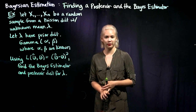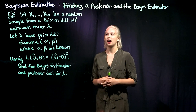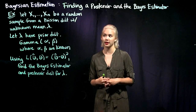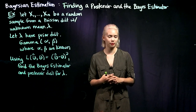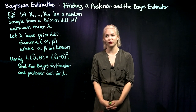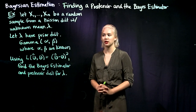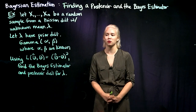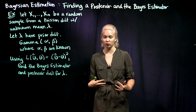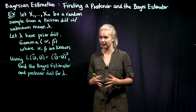In this example, we have a random sample of size n. Remember, random sample means iid, and it's from a Poisson distribution with some unknown mean lambda. So lambda is our parameter, and since we're in the Bayesian setting, we need to have a prior distribution for lambda.